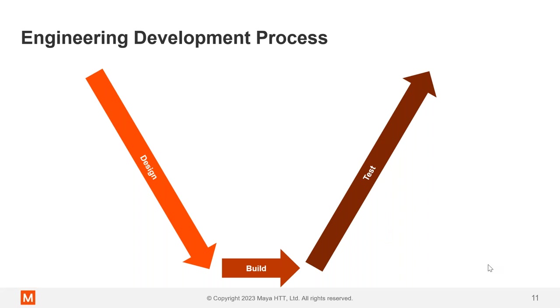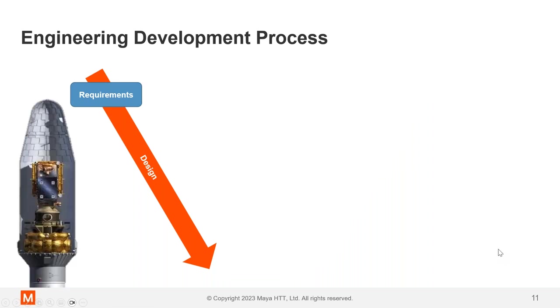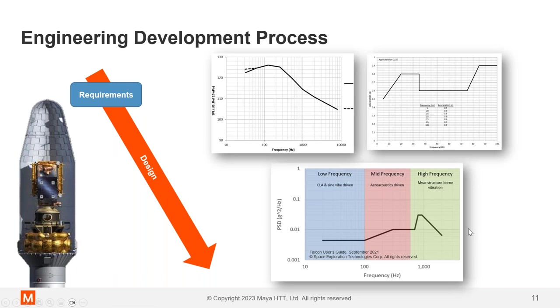And then if we step back and look at the engineering development process as a whole, let's see how vibration fits into there. So you have the requirements at the beginning of your design phase. And let's use an example of a spacecraft. It would be sitting in the rocket and you'll get requirements up front. These are the design requirements you need to meet. These are meant to envelope the environment that the spacecraft is expected to see.